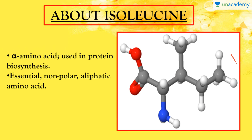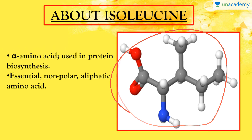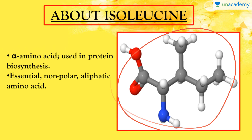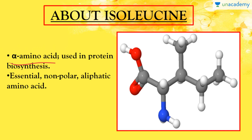This is the molecular structure of isoleucine. It is an alpha amino acid which is used to synthesize protein. It is an essential amino acid, meaning it cannot be synthesized in our body and we have to obtain it from food or foreign sources to maintain a proper level of isoleucine for proper body functioning. It is non-polar and aliphatic in nature.